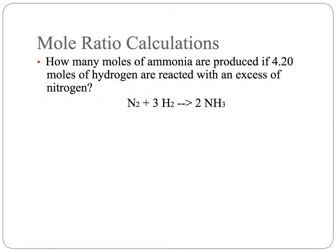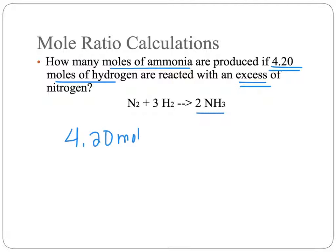So how do we use these in calculations? Here's an example. The question asks: how many moles of ammonia are produced if 4.20 moles of hydrogen are reacted with an excess of nitrogen? Our question is asking us to calculate moles of ammonia. We're given 4.20 moles of hydrogen, and we have an excess of nitrogen — we have plenty of it, so we don't have to worry about it.